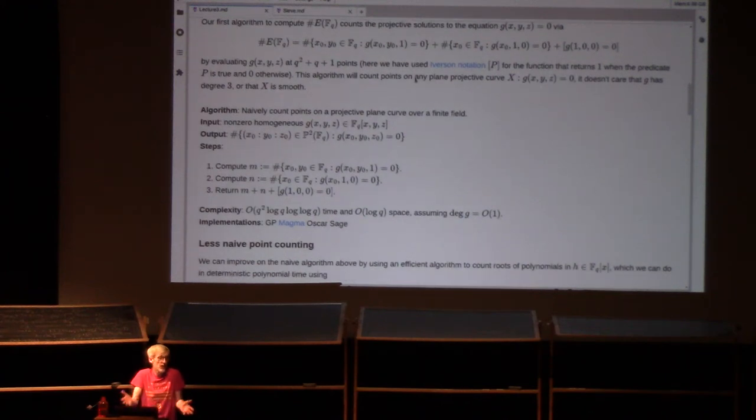I almost feel silly writing down the algorithm because I basically already told you the algorithm. Compute the sum that we just wrote down. Just to lay out the steps, be very precise about it. Our input is some non-zero homogeneous polynomial in three variables. Our output is the number of solutions, points where that polynomial vanishes in P2, the F_q rational points where it vanishes. We compute that by first counting the points with non-zero Z coordinate, then counting the points with zero Z coordinate but non-zero Y coordinate, and then finally adding in either zero or one to account for whether there is a point with non-zero X coordinate and zero Y and Z coordinate.